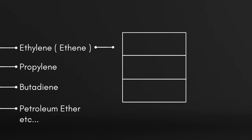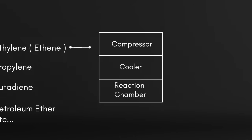The next step: ethane is converted into polyethylene. By the process of polymerization, first the ethane is compressed and cooled. Then it is now dense, almost like liquid. It is sent to the reaction chamber.